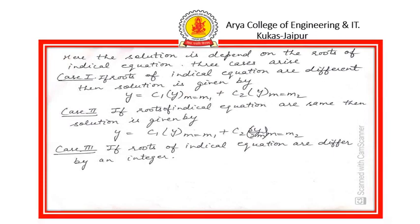The solution depends on the roots of the indicial equation, and three cases arise. Case 1: if the roots are different, the solution is y equals c₁y(m=m₁) plus c₂y(m=m₂), as discussed in this lecture. Case 2: if the roots are the same, the solution takes a different form. Case 3: if the roots differ by an integer and the series becomes infinite, a special approach is needed. The remaining two cases will be discussed in the next video lectures. Thank you.